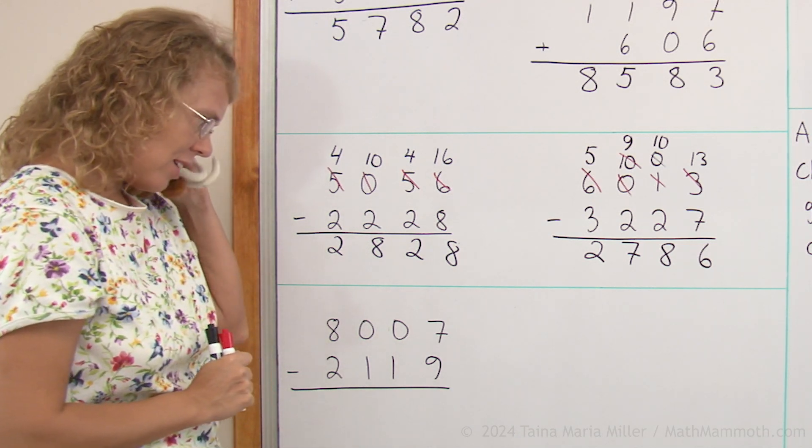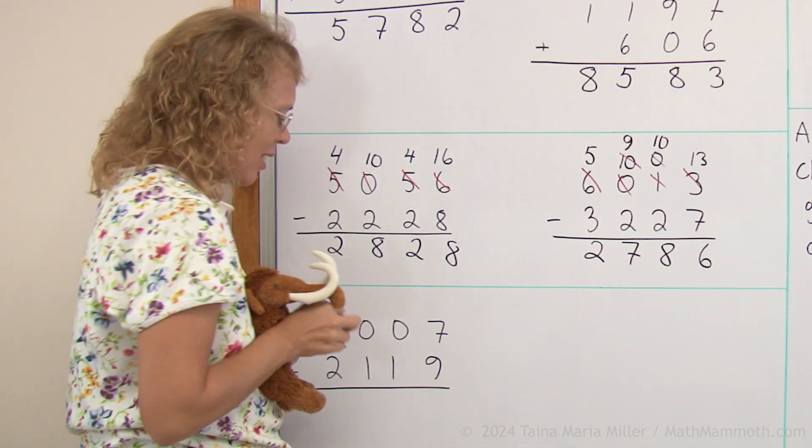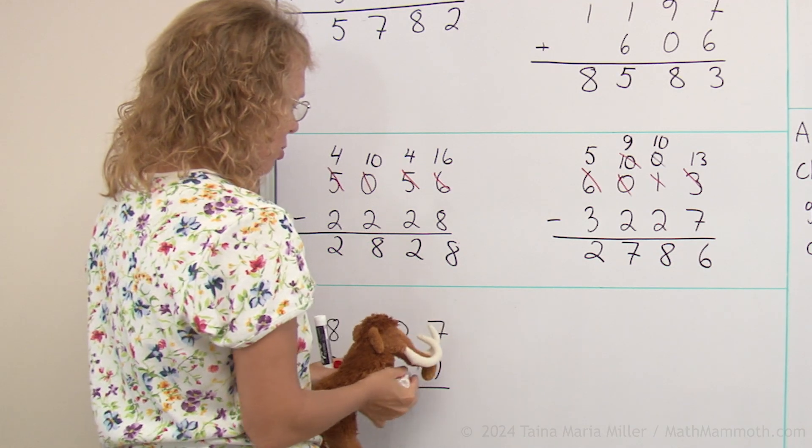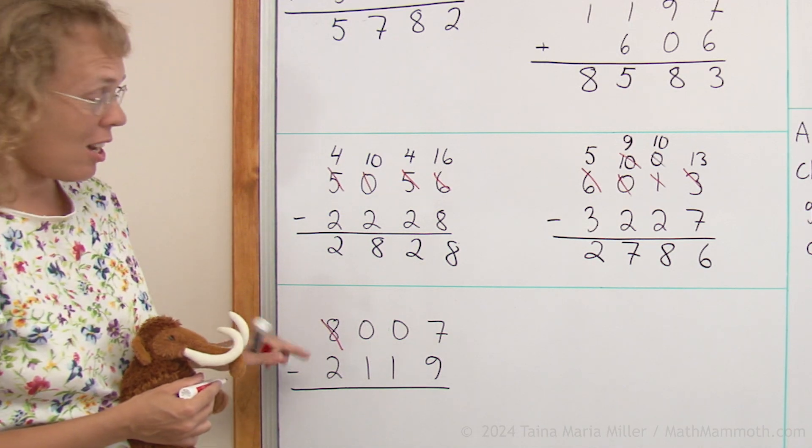What are you saying? You want to come and do this? Okay, go ahead. We have seven minus nine. Yes, we need to go and regroup. Take a thousand, right?